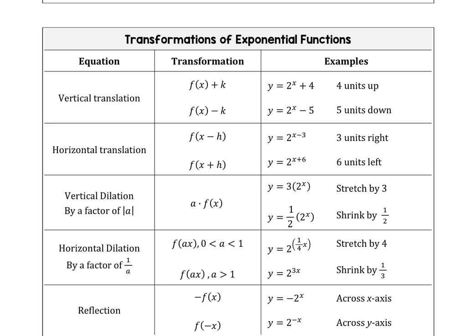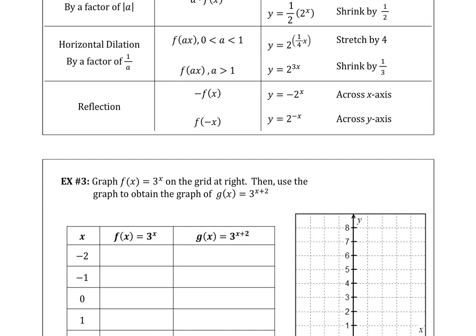This slide shows us the transformations of exponential functions and what each transformation does to the graph. For example, a vertical translation of positive 4 would move our graph 4 units up on the y-axis. We won't spend a lot of time with these, but they're here as a reference. Let's move on to the next example.